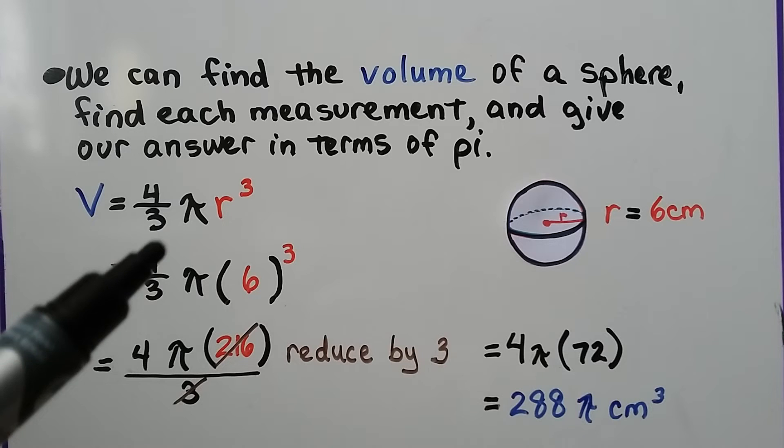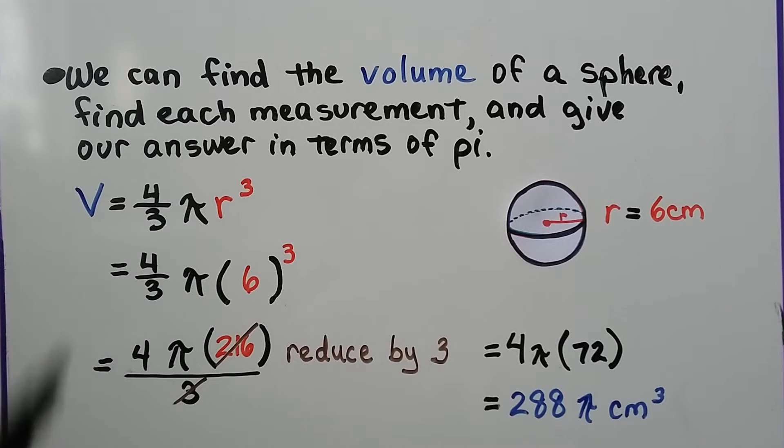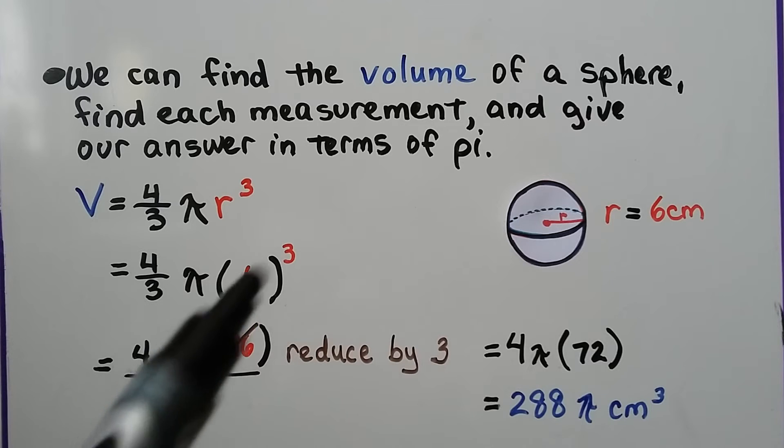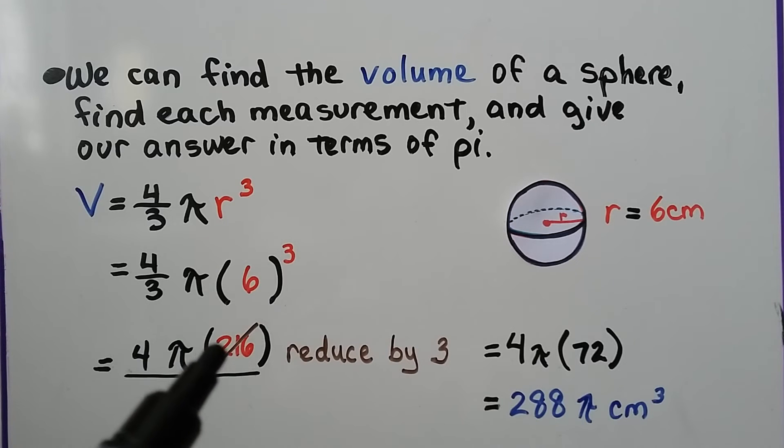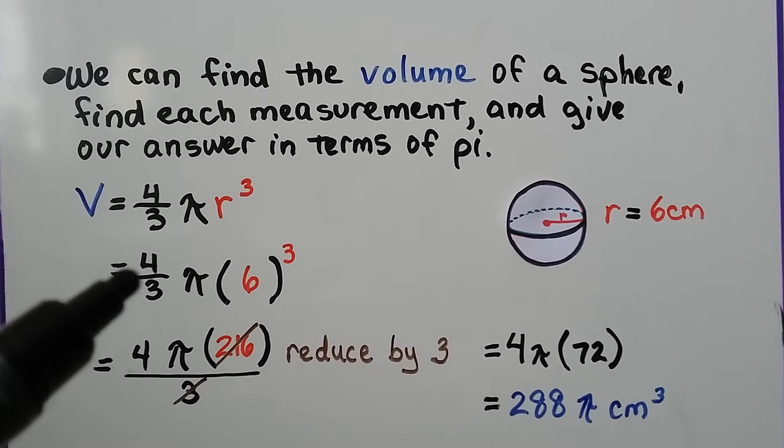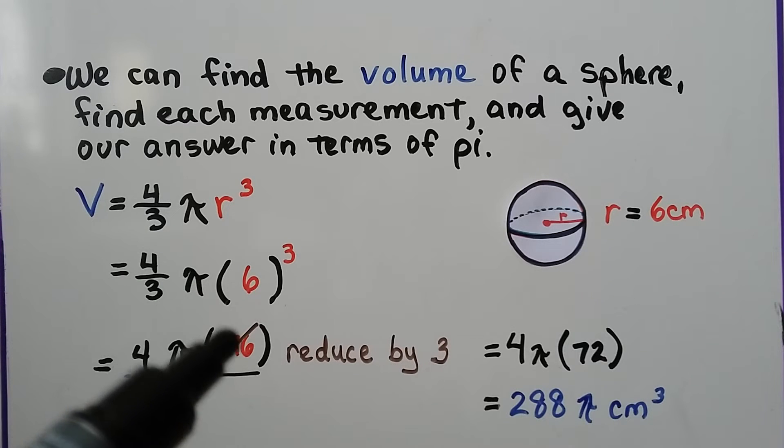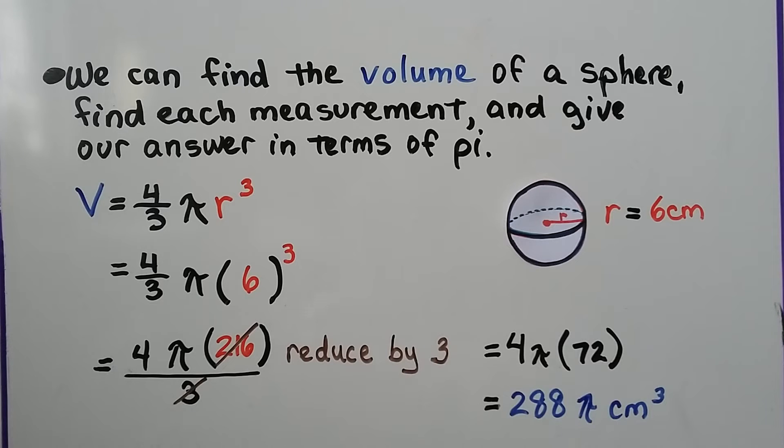We have our formula, volume equals 4 thirds times pi times the radius cubed. If we're given that the radius is 6 centimeters, we're going to do 6 cubed, which is 216. And we can write this whole thing as 4 pi times this 216 over this 3, and we can reduce by 3.